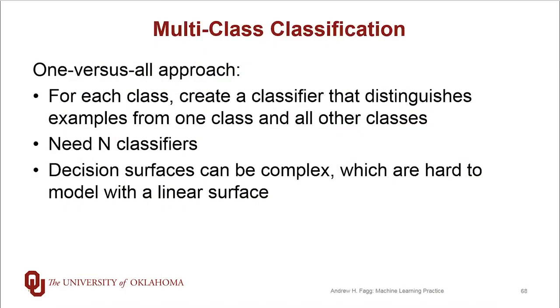So this particular approach is something called one versus all. And the process is that for each class, we create a classifier that makes a distinction between that class and all other samples that we have in our training set. In this case, we need only N different classifiers. We don't need order N squared. The challenge in this case can be that the decision surfaces might need to be a bit more complex in order to really capture the nature of the data. We actually saw that in this example that I was constructing on the fly.